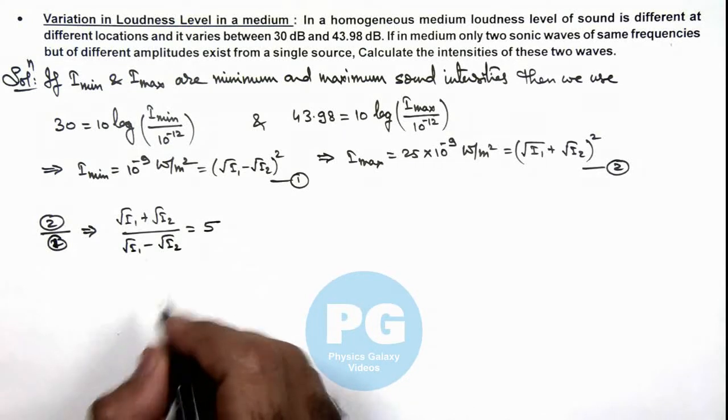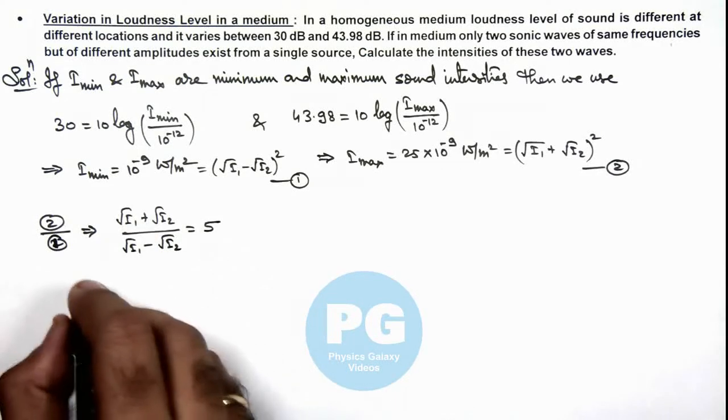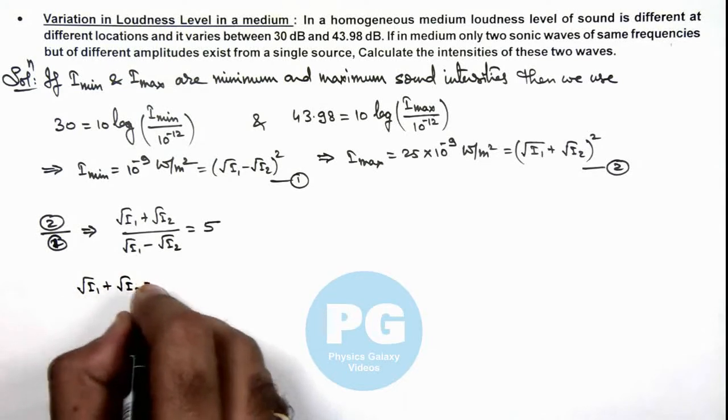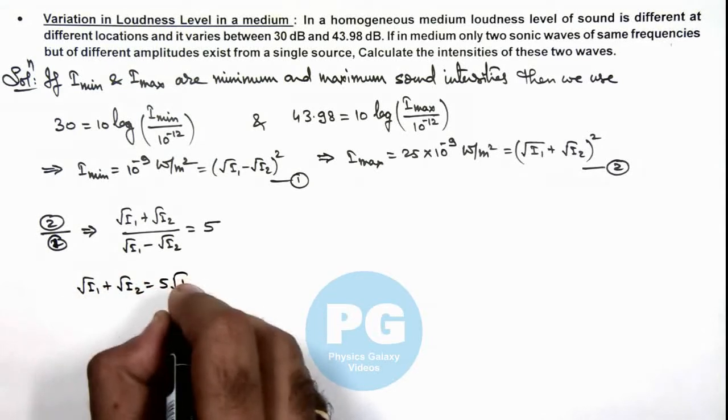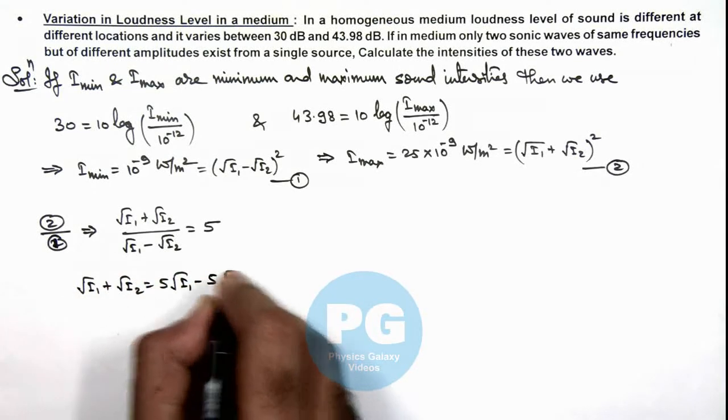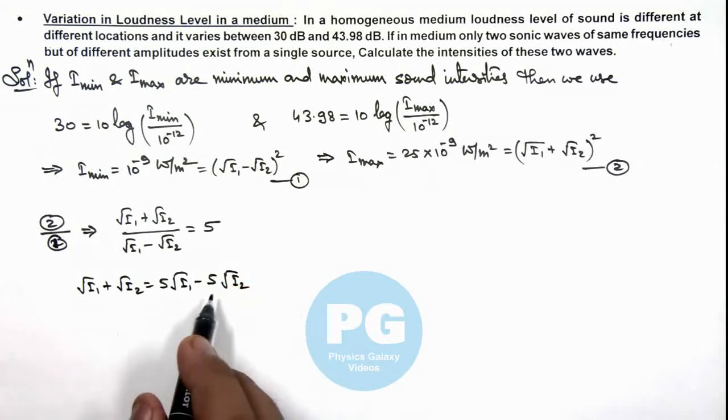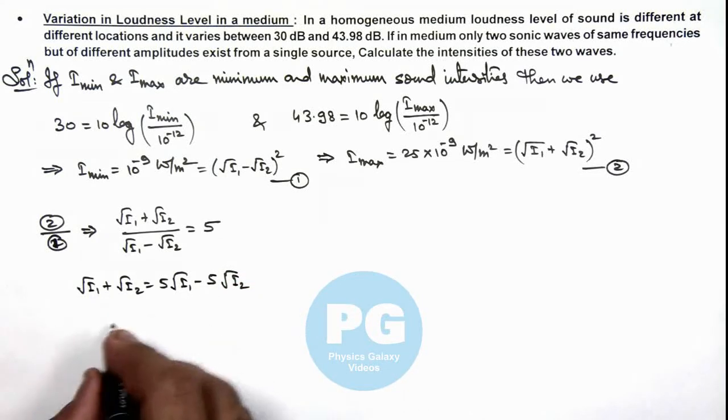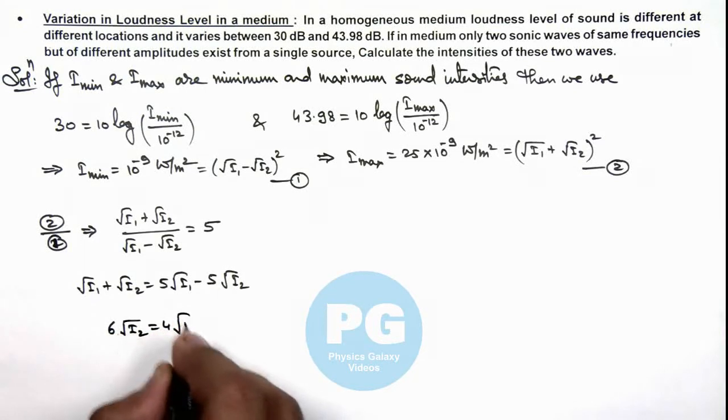So further on simplifying this relation it gives root I_1 plus root I_2 is equal to 5 root I_1 minus 5 root I_2, and further rearranging these terms we are getting 6 root I_2 is equal to 4 root I_1.